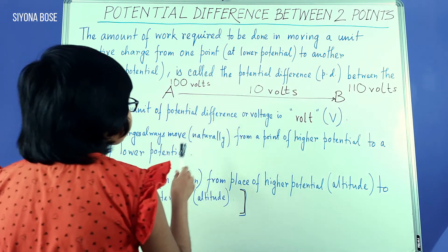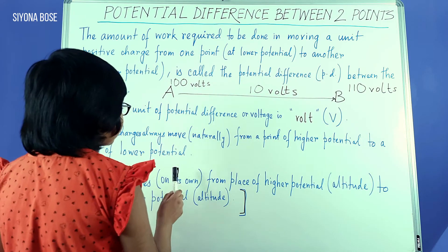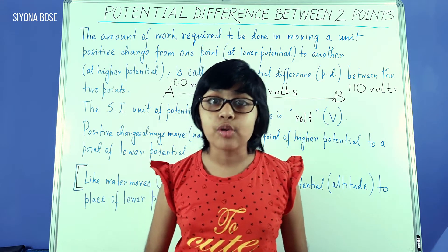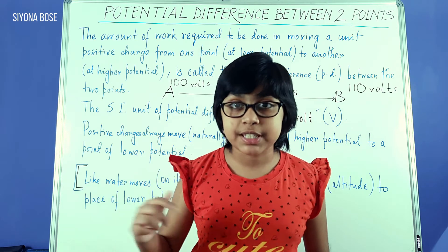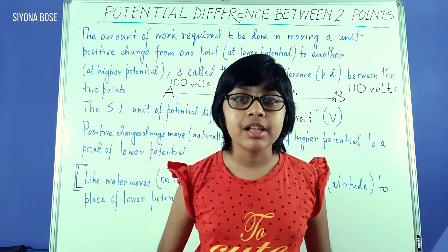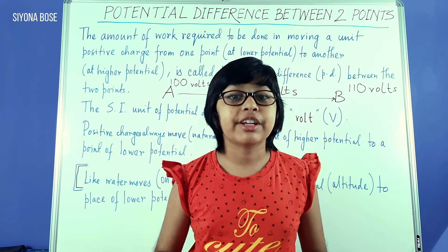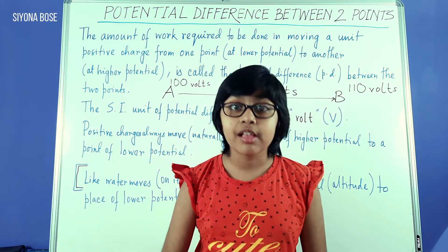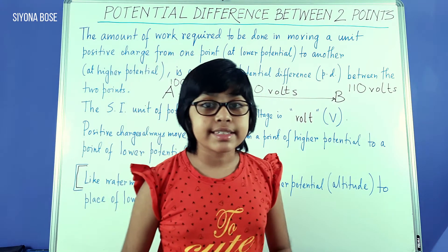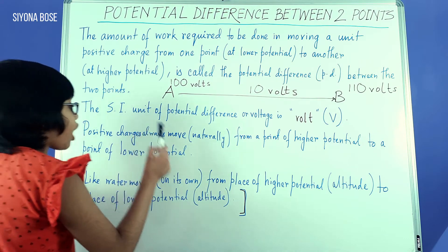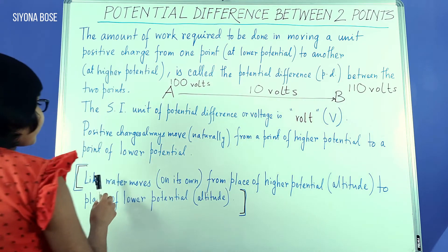Now, positive charges always move naturally from a point of higher potential to a point of lower potential. This is a very important thing to know, is that whatever we see, most of the time, it always has a tendency to go from a higher potential to a lower potential, because from a higher potential to a lower potential, it does not need any work to be done. But when you try to bring something from a lower potential to a higher potential, you need to do some work, like in this case. So that is what is working here. Positive charges always move naturally from a point of higher potential to a point of lower potential.